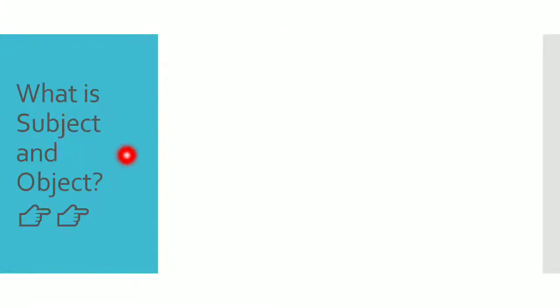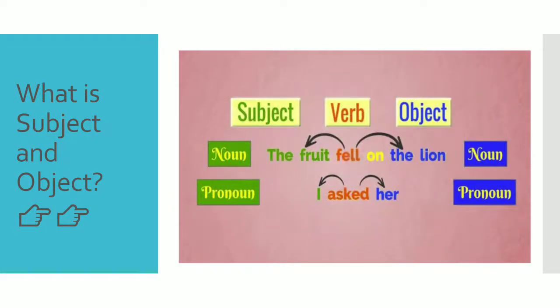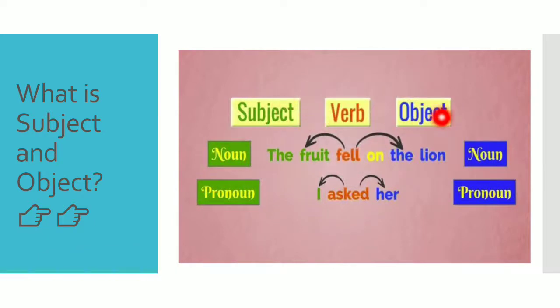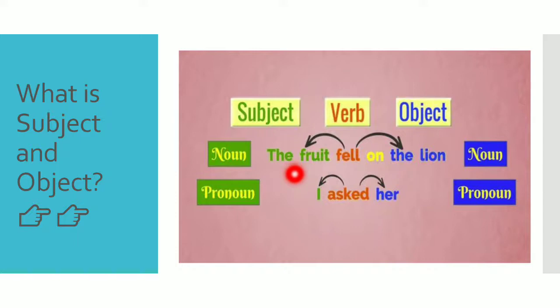The next terms are subject and object, which are parts of a sentence. A sentence is framed with the help of a subject, object, and a verb. When we have a subject, verb, and object in the correct order, it becomes a complete sentence.